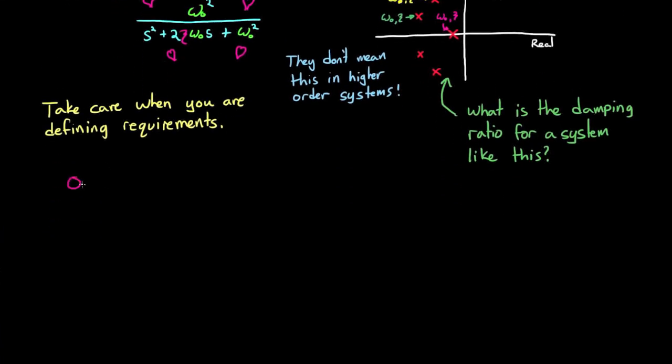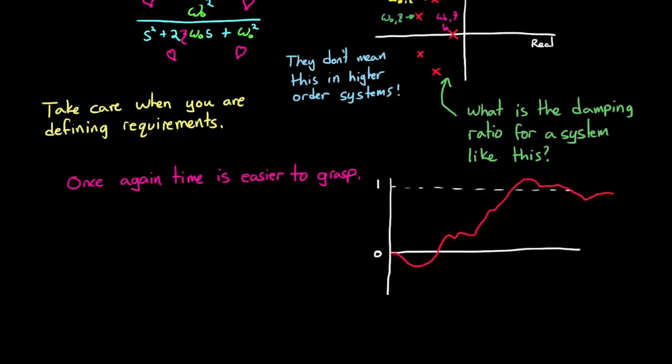At the risk of confusing you, I do want to say one other thing. You can usually define the time and frequency domain requirements for higher order systems. For example, rise time still makes sense even if the system response to a step input looks something like this. So the bottom line is that even though you have an equation that converts percent overshoot to damping ratio, you still need to know when it makes sense to use it. Thanks for sticking around for that long answer, and let's move on to the next question.